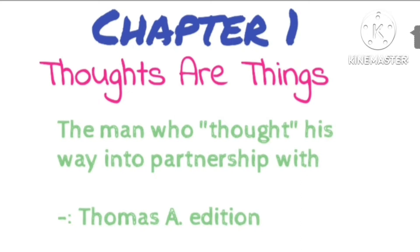When this desire or impulse of thought first flashed into his mind, he was in no position to act upon it. Two difficulties stood in his way: he didn't know Mr. Edison, and he didn't have enough money to pay his railroad fare to Orange, New Jersey. These difficulties were sufficient to have discouraged the majority of men from making any attempt to carry out the desire, but his was no ordinary desire. He was so determined to find a way to carry out his desire that he finally decided to travel by blind baggage rather than be defeated.